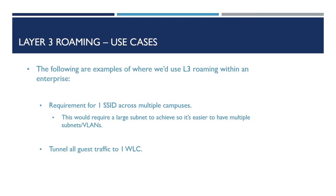Finally, Layer 3 roaming. This is beneficial if we have a large network, for example a university spanning multiple campuses. It would be beneficial to have different VLANs within different campuses to avoid spanning VLANs across multiple locations.